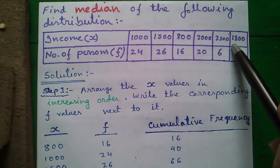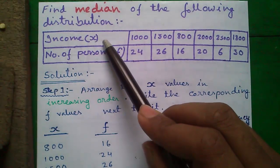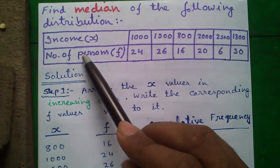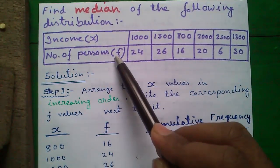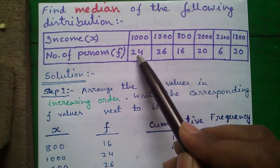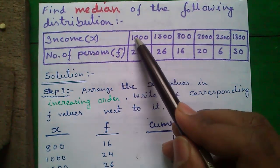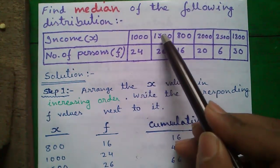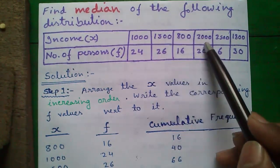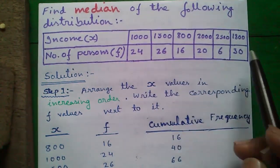Here the payroll information of an office is given. Incomes are denoted in X, some incomes are given and number of persons having the same income are denoted by F. That means 24 numbers of people have the income of 1000, 26 number of people have the income of 1500 and so on. We have to find out median of the income.